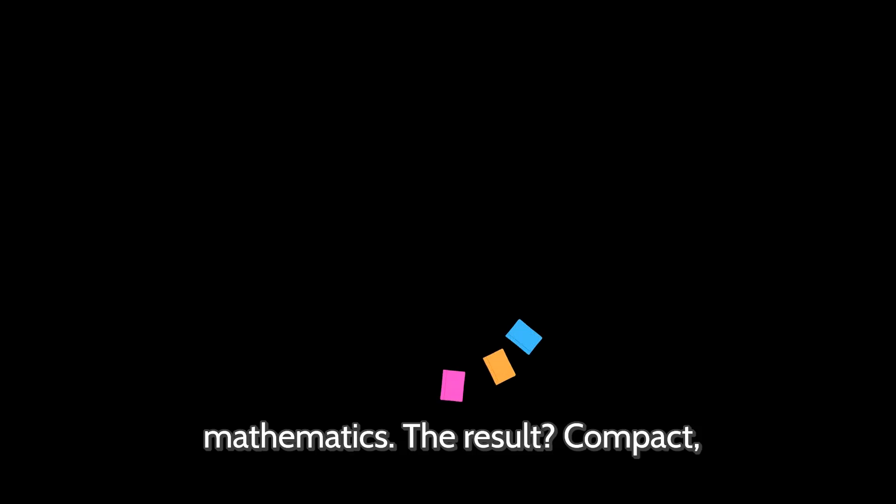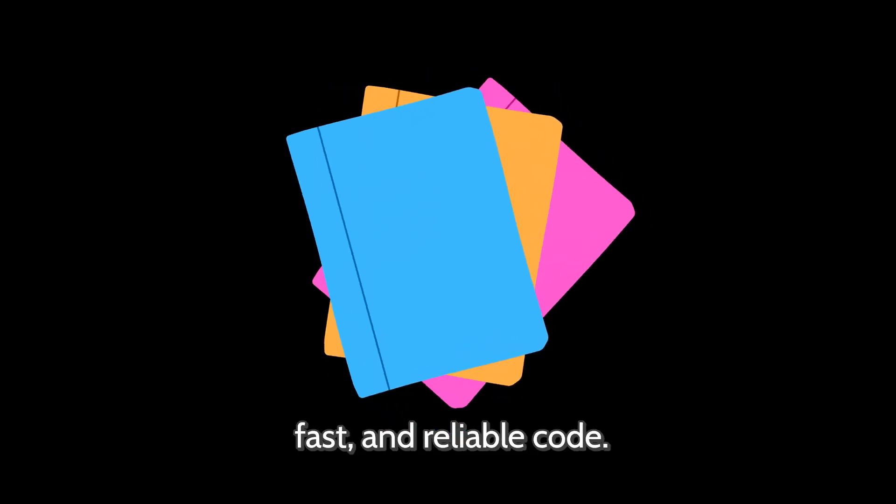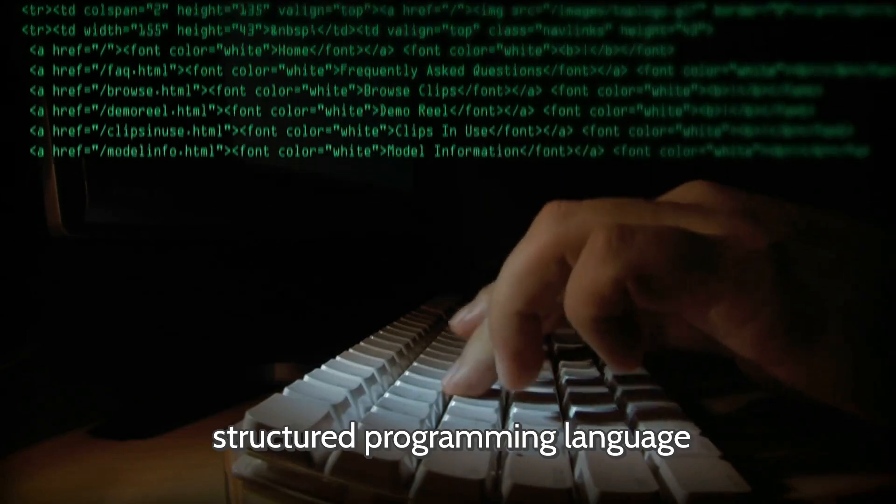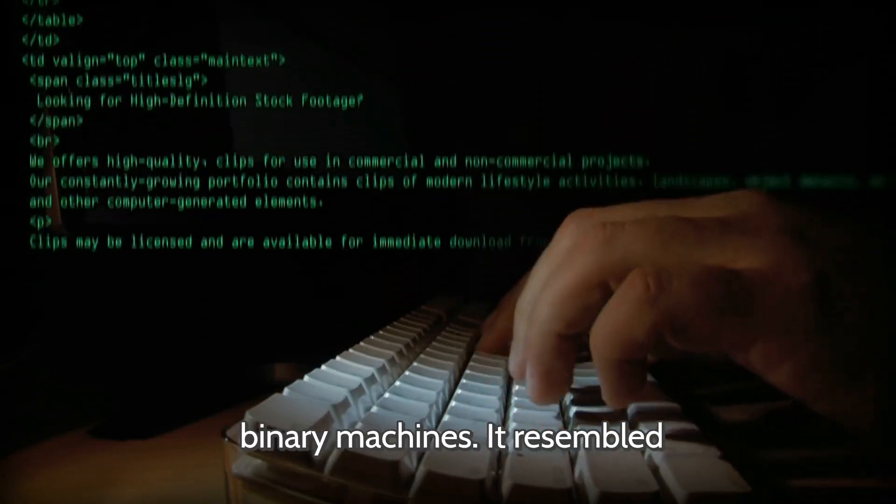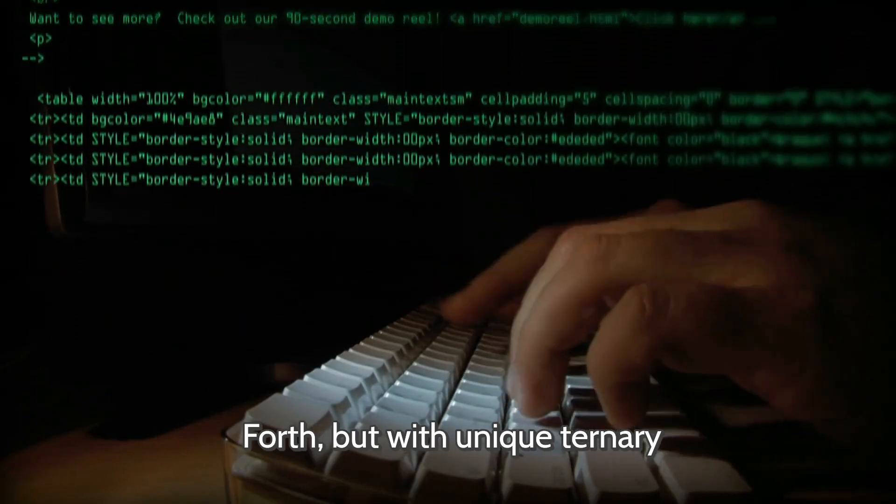The result? Compact, fast, and reliable code. Seton 70 inspired DSSP, a structured programming language that emulated its architecture on binary machines. It resembled Forth, but with unique ternary logic.